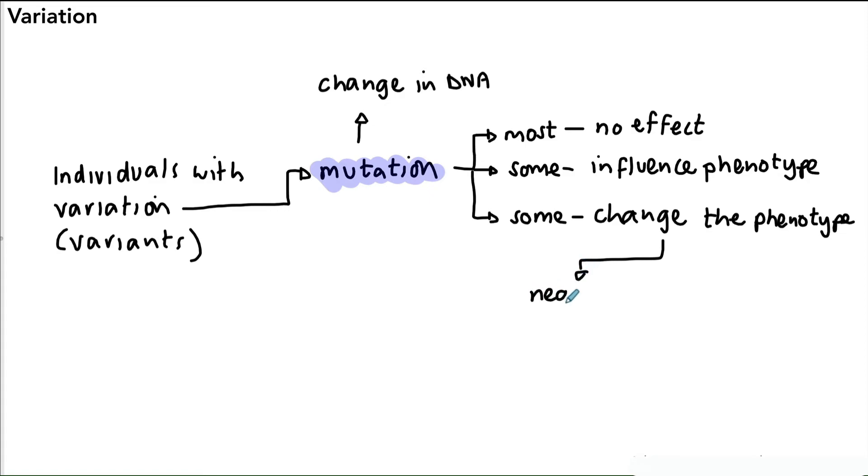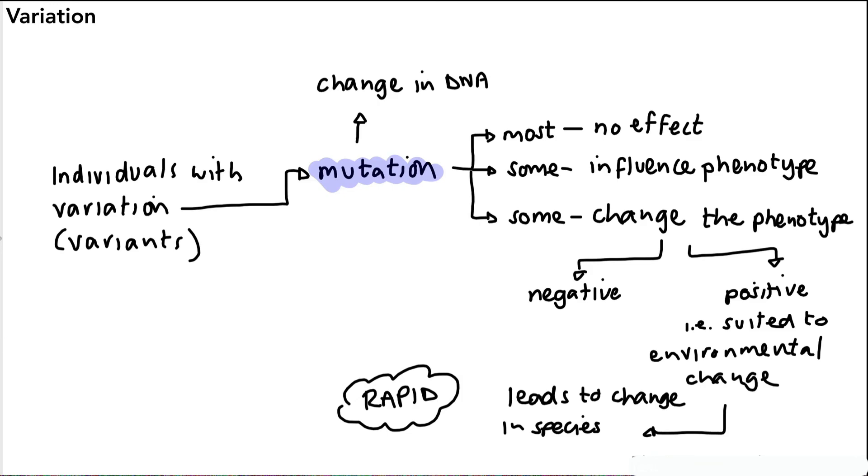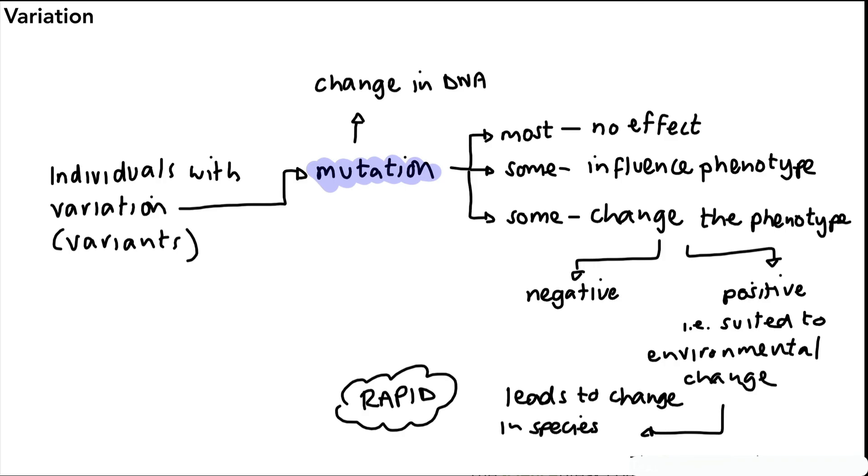That change can sometimes be negative. In other words, it could cause a disadvantage for the organism. And sometimes it could be a positive change. And by positive, we mean a change that allows the individual to be better suited to its environment. So this could be a slight change in coloration or any other kind of change that appears in the phenotype. The individual is better suited to its environment. And over time, that change could be spread because it's passed on to offspring. And that could lead to a change in the species. And changes that happen via mutation, we describe them as quite rapid changes in the species. And this is because the mutation can be spread just over just a few generations and not millions of years, which is sometimes how long it takes for some changes in species to happen.